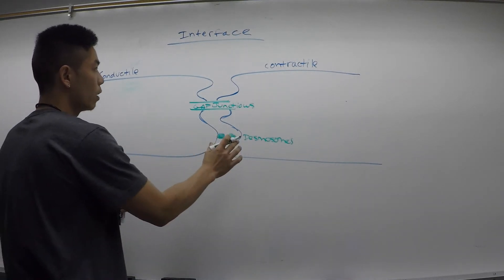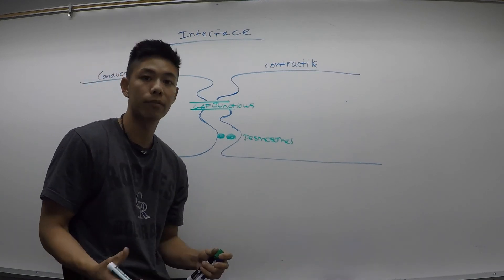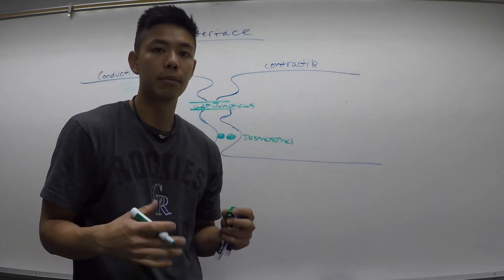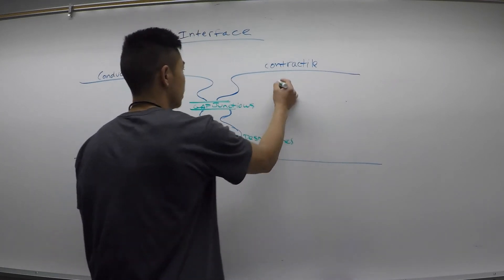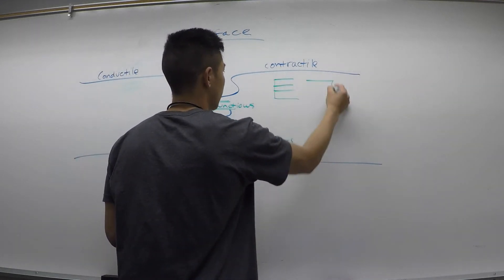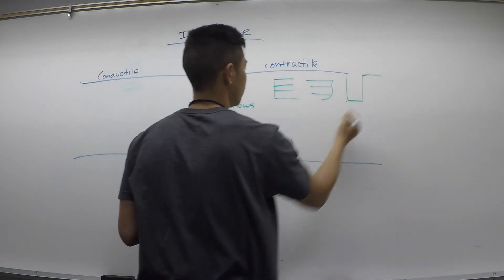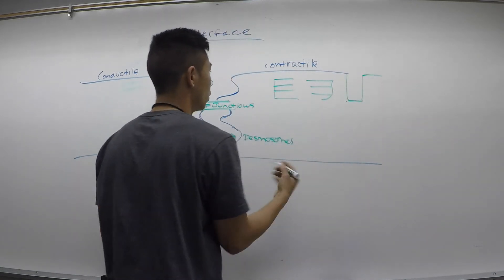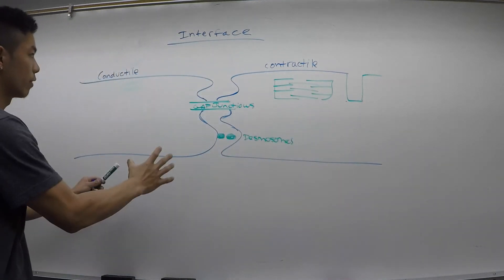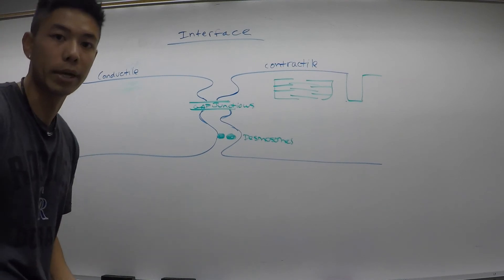Our contractile cardiomyocytes are going to be a little more representative of your typical muscle cell. They're going to have actin and myosin filaments, and they're going to have their T-tubules. This is the interface between the conductile and contractile cardiomyocytes.